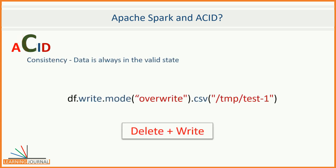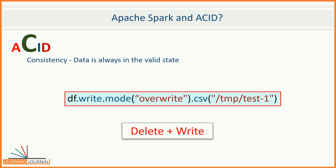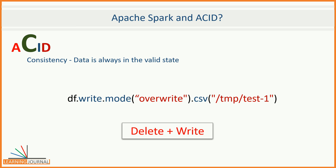The next item in ACID is Consistency. For a data processing system, consistency means a lot. At the most basic level, consistency ensures that the data is always in a valid state. Now think about the overwrite mode of the Spark Writer API — it deletes an old file and then creates a new one. These two operations are not transactional. That means in between there is a time when data does not exist. If your overwrite operation fails, you are going to lose your data.